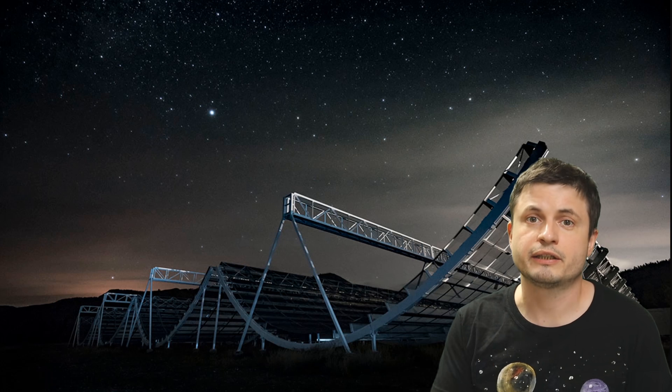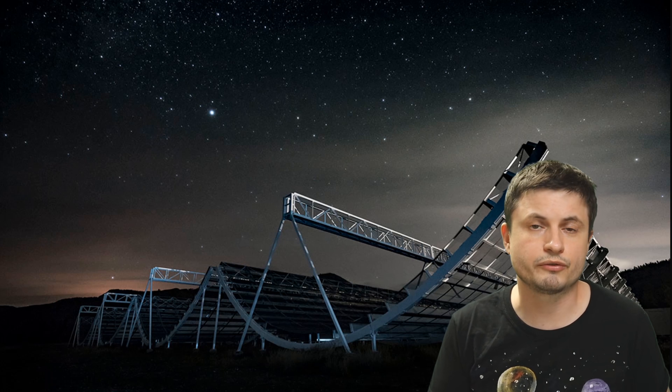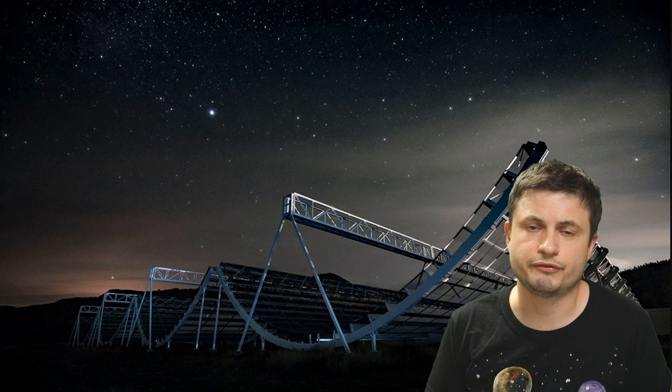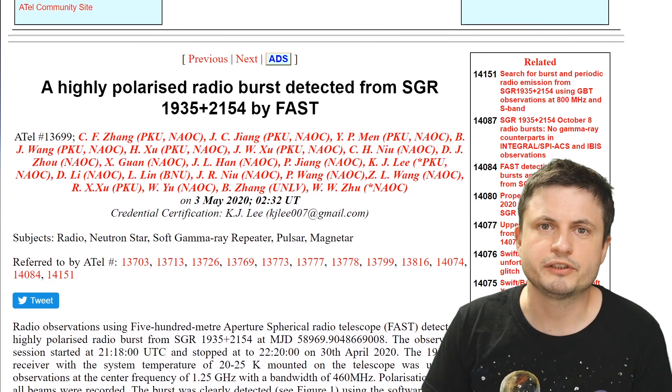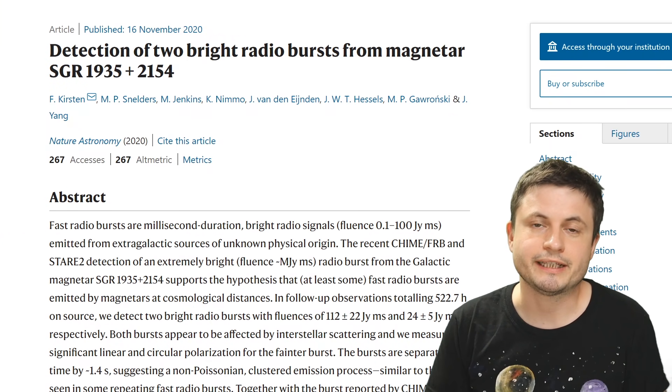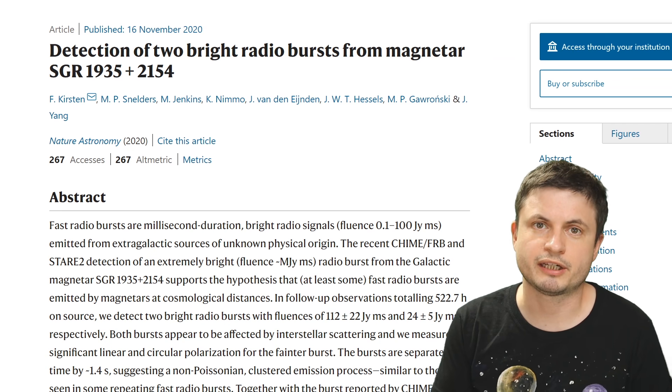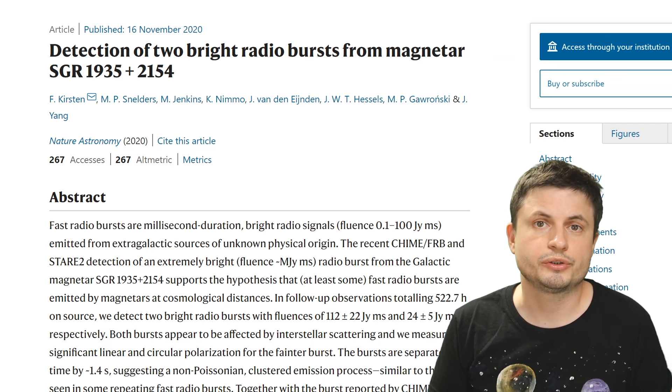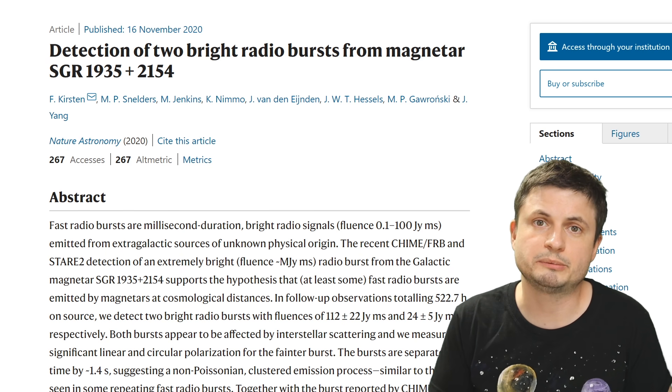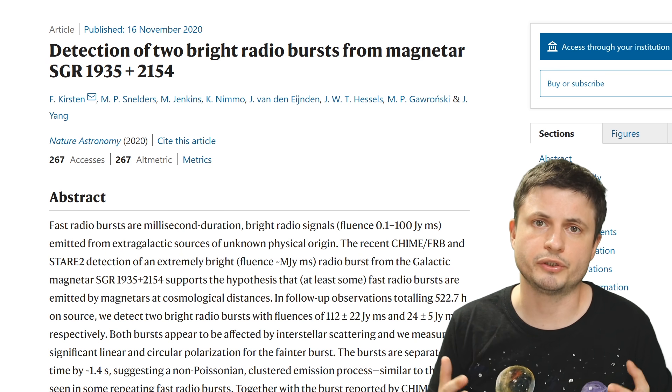But interestingly enough, yet another additional FRB was observed from this location only a few weeks ago from when I'm making this video. And so along with the previous observation of the FRBs made back in May of 2020, this officially designates this unusual magnetar we have in the Milky Way as a source of repeating FRBs, thus helping us explain how they could possibly be forming in other regions of the universe as well.